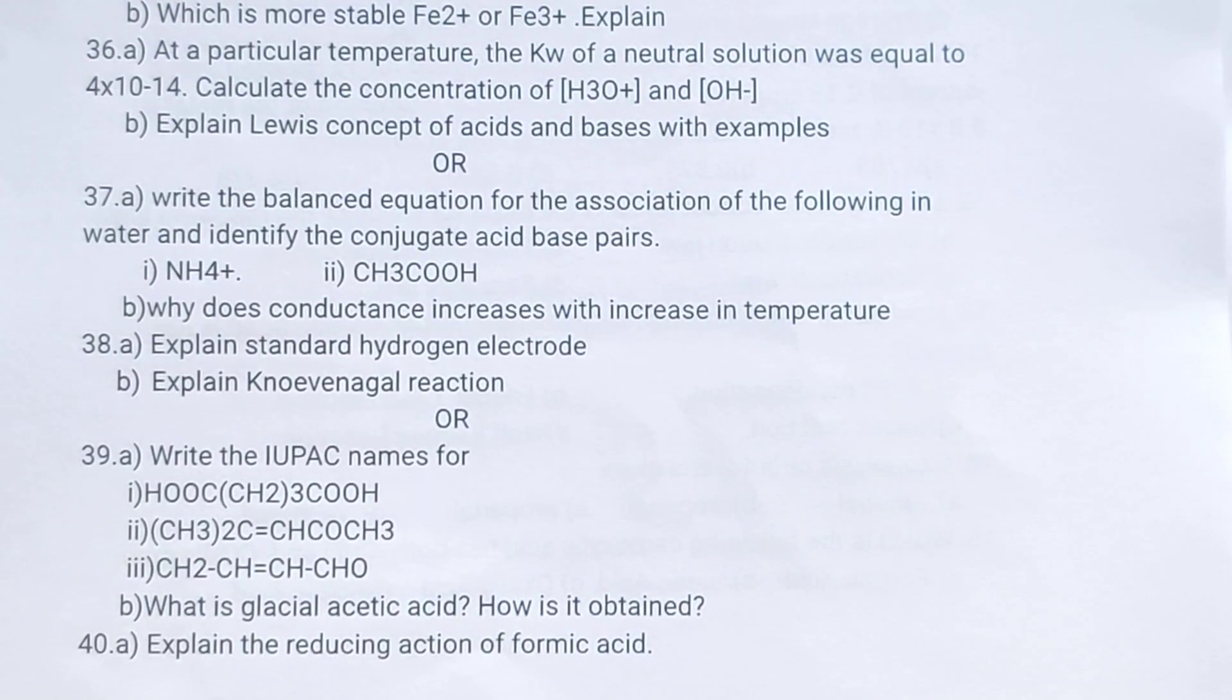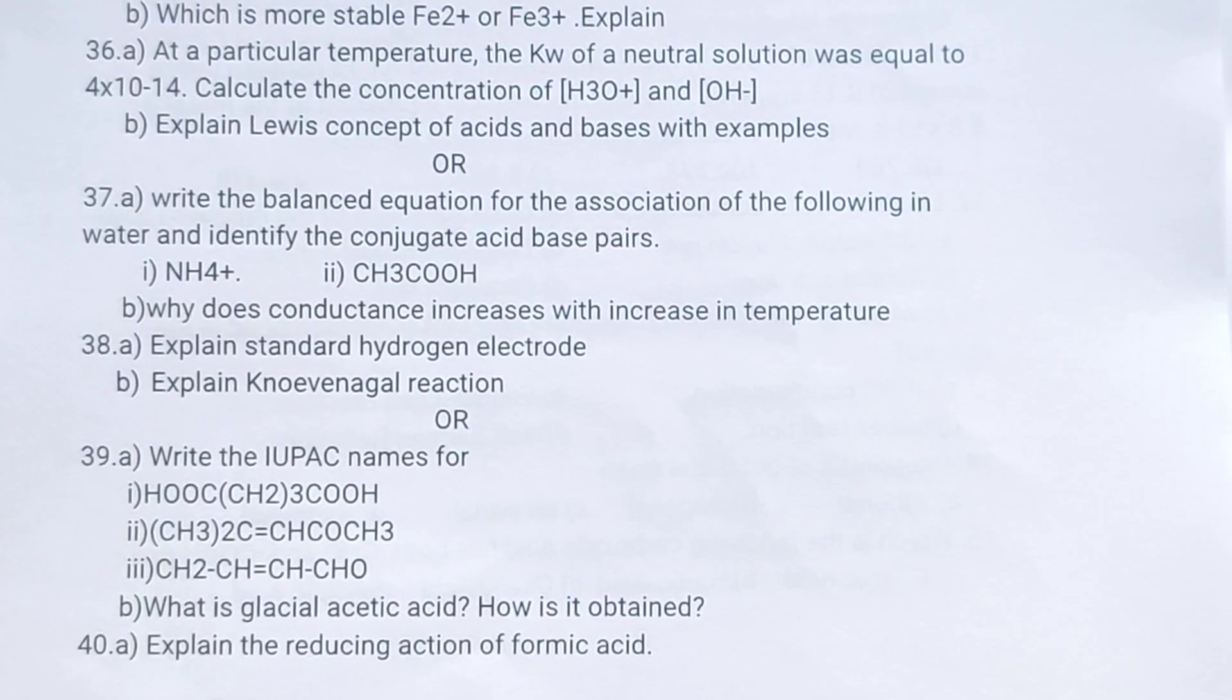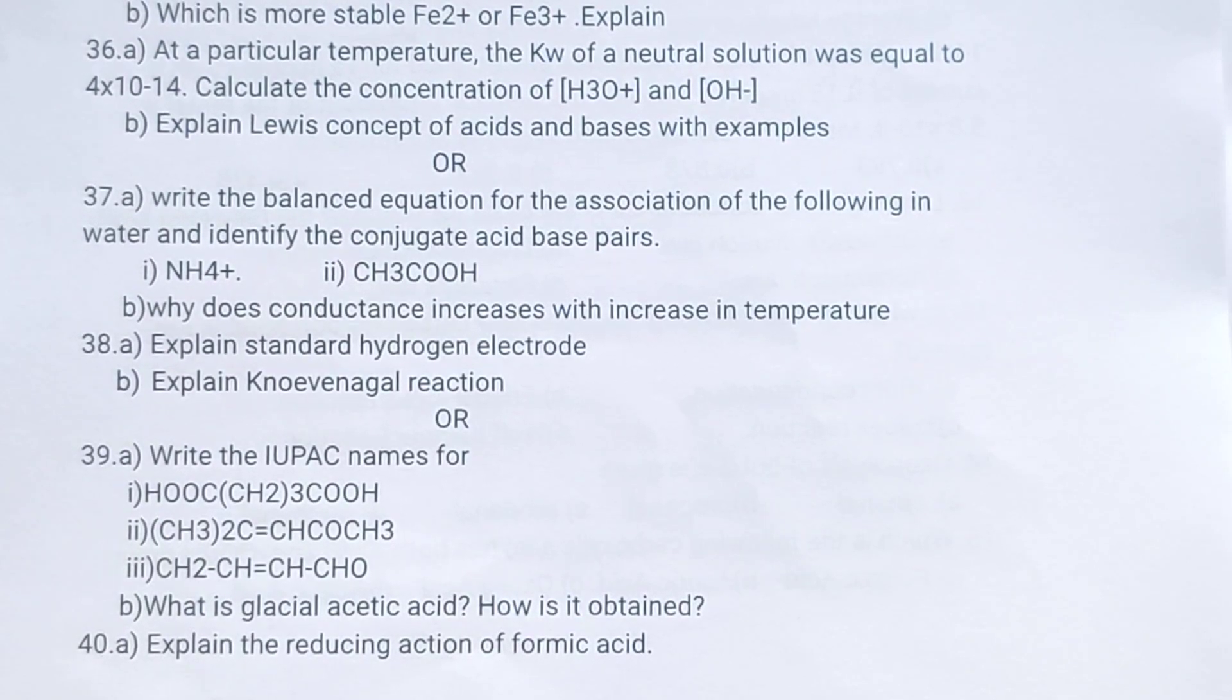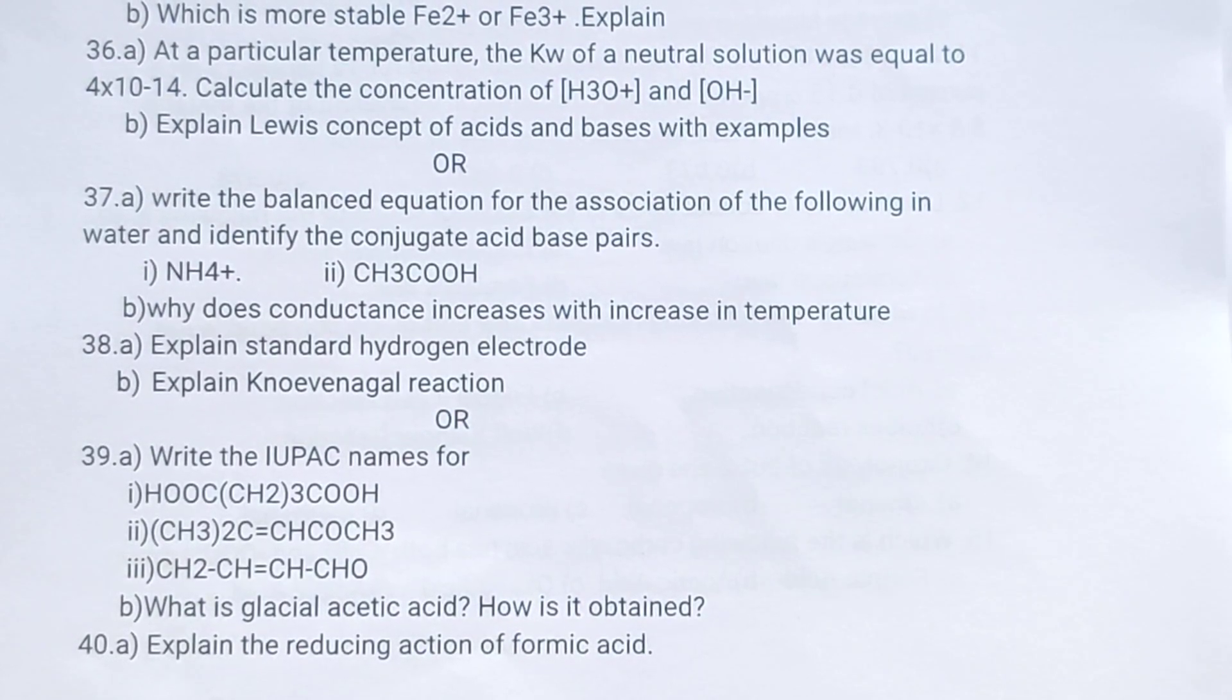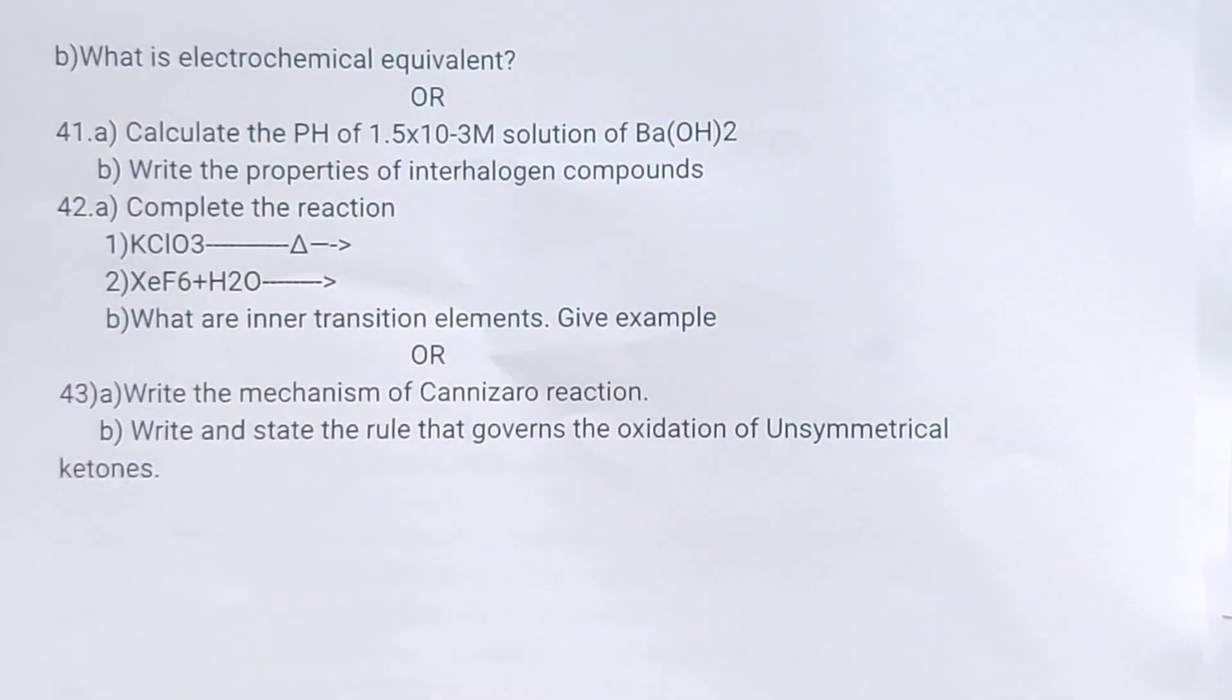Then 38. Explain standard hydrogen electrode. Explain quinone-fugal reaction. 39 A: Write the IUPAC names for. B: What is glacial acetic acid? How is it obtained? 40 A: Explain the reducing action of formic acid.